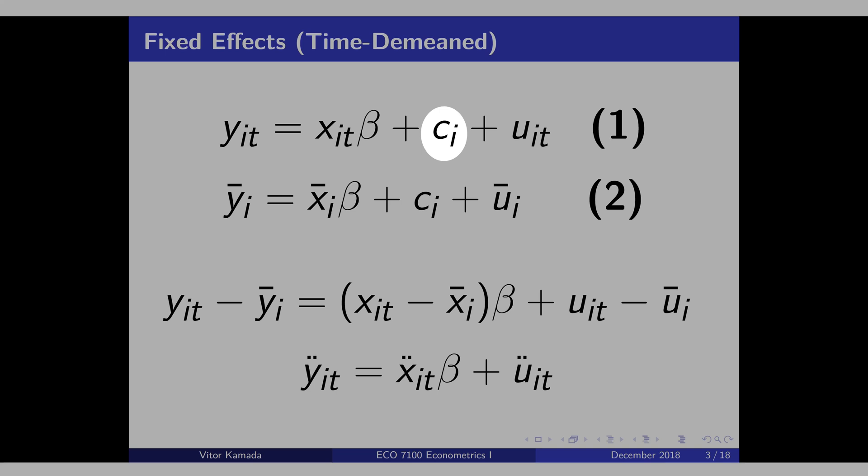Note that Ci is not function of time. Therefore, when you average Ci over time, you just get Ci. And if you subtract equation 2 from equation 1, we vanish with Ci. And you call this process time demeaning, and you can write in a more compact way this equation, in this way.